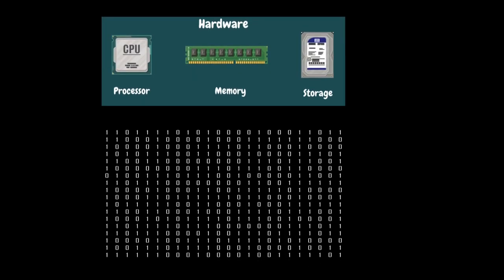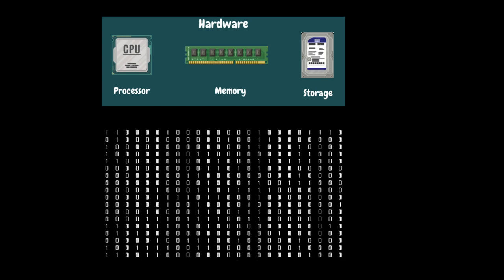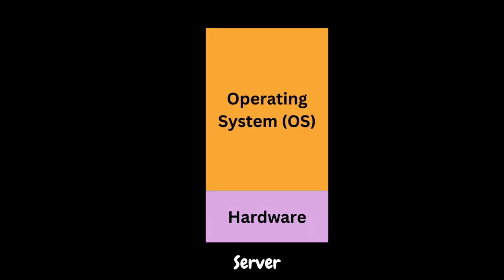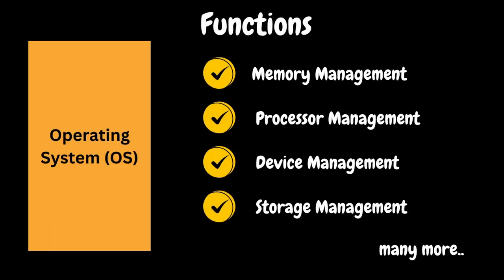Computer hardware can only understand binary language consisting of zeros and ones, so it is challenging for humans to communicate directly with computer hardware. That's where the operating system, also known as OS, comes to the rescue. An operating system manages all other applications and programs in a computer or server, and is loaded into the system by a boot program. It helps applications interact with the computer's hardware — we can think of it as a mediator between hardware and software. When the user sends a request from a browser, it goes to the software running on the server, which then communicates that request to the hardware via the operating system.